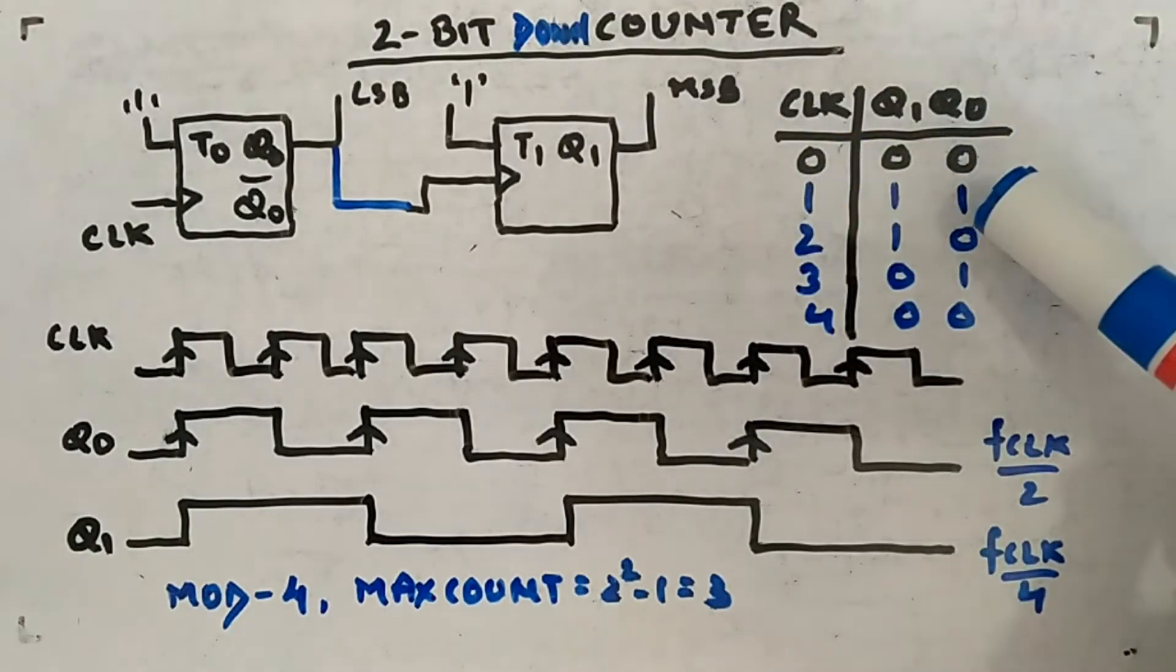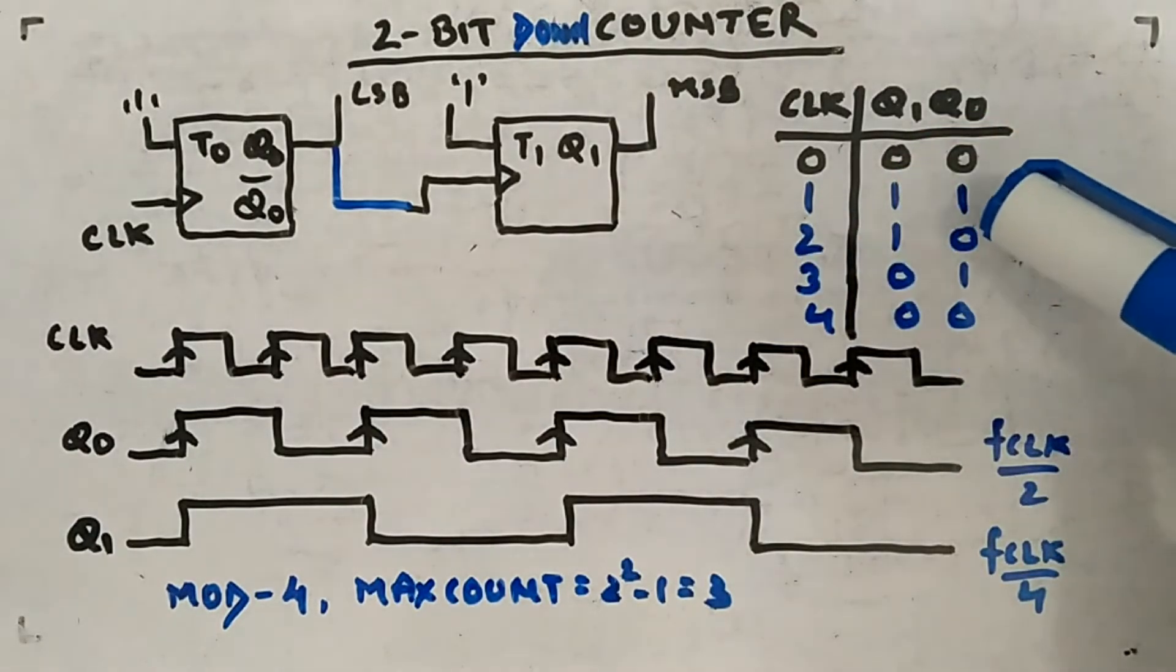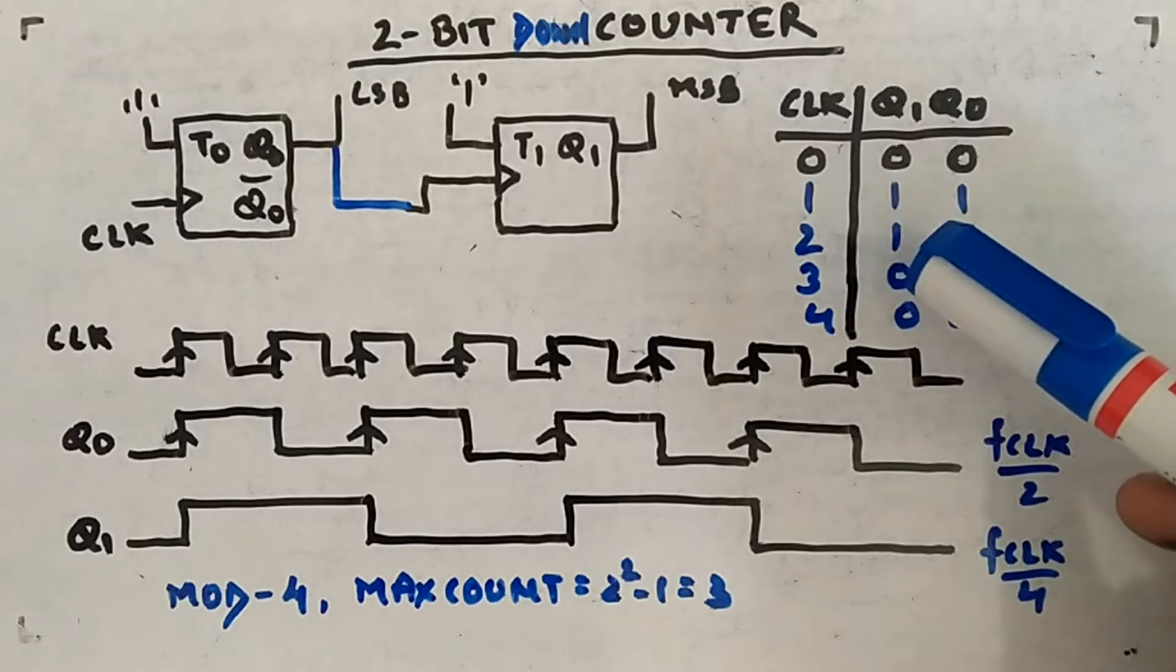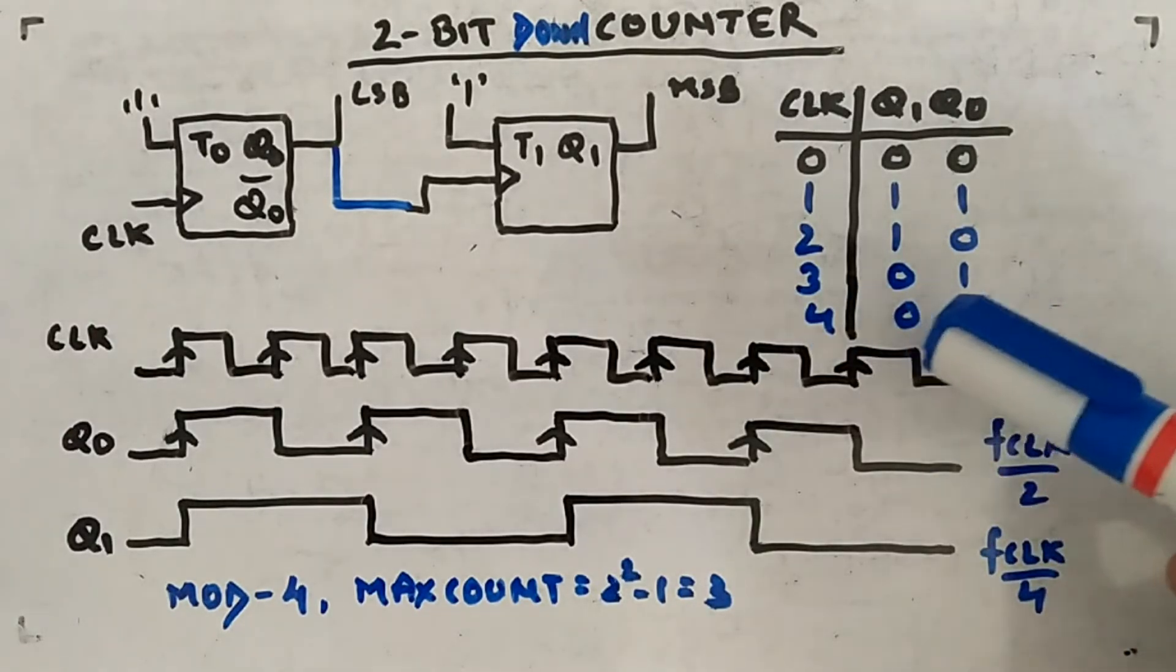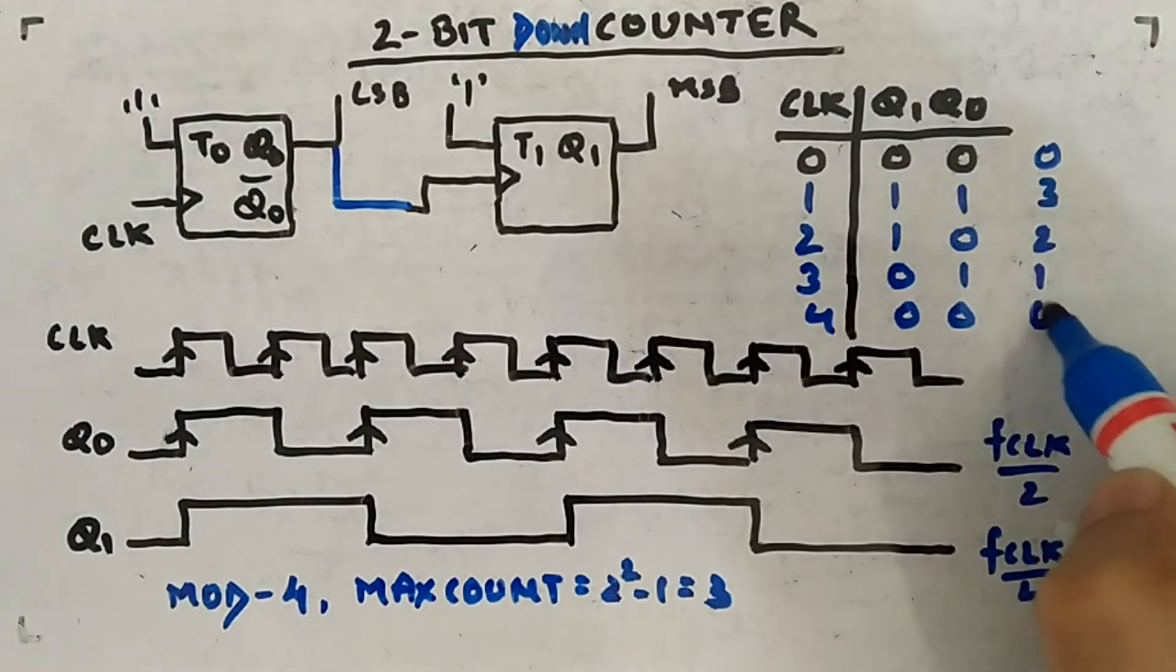When first clock pulse came, Q0 changes its state because it is toggling every clock pulse. So it becomes 1. Since there is a change from 0 to 1, and this is being fed to T1 flip-flop, 0 to 1 means positive edge, so this guy will also change its state: 0 to 1. Second clock pulse came, this becomes 0. Since there is a change from 1 to 0, negative edge is coming, hence same state is maintained in Q1. Then third clock pulse came, this becomes 0 to 1. Since it is going from 0 to 1, this guy will also change its state and it becomes 1 to 0. Then four clock cycles, it becomes 00 again. So what is the sequence being followed: 0, 3, 2, 1, 0. That's how sequence is being followed. So it is a down counter.